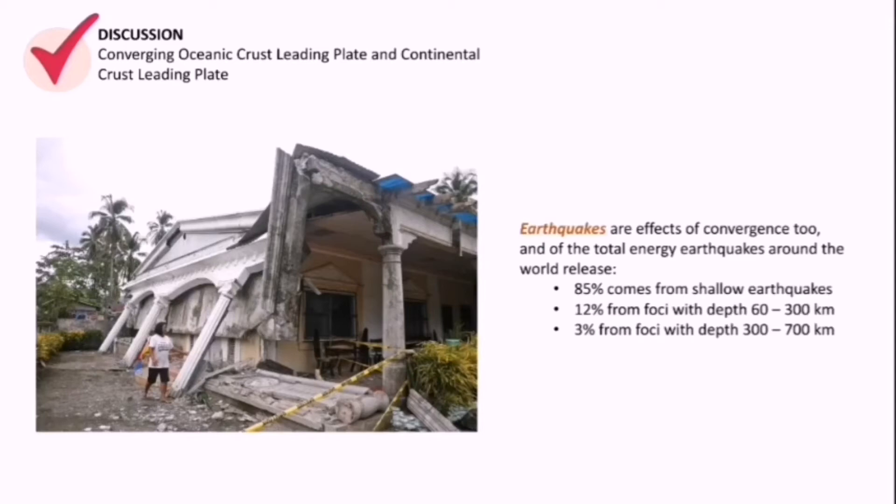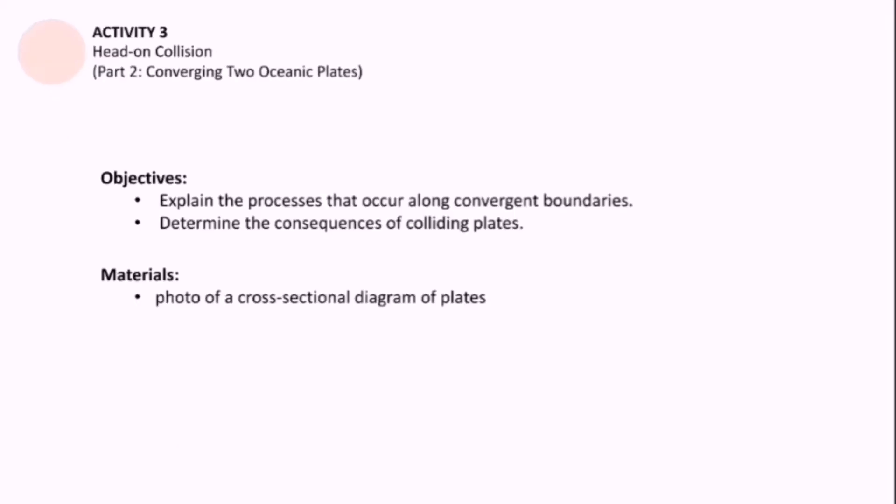Activity number three is our next task. So I want you to get your notebook. The objectives of this are the following. First, you need to be able to explain the processes that occur along convergent boundaries. Remember that we're not yet done with convergence. We're still talking about plate boundaries that are colliding. The next objective is determining the consequences of colliding plates.